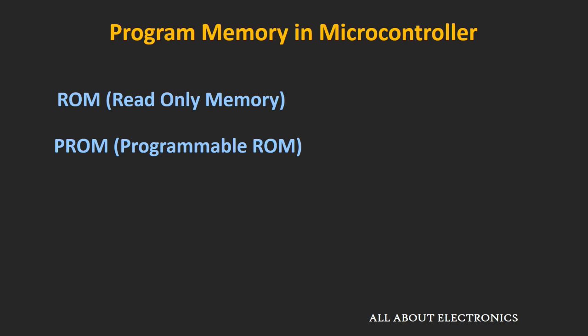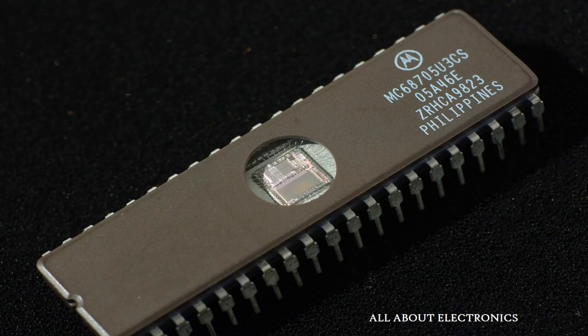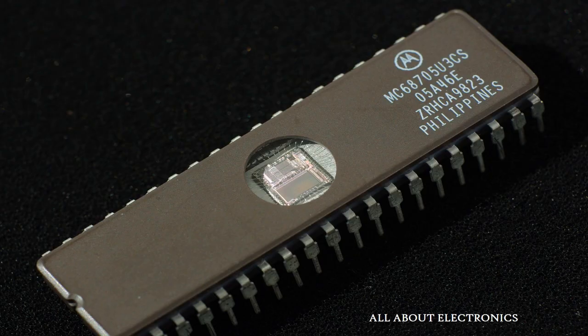As technology evolved, the third kind of memory came into the market: the EPROM, which stands for Erasable Programmable ROM. We can erase the content of this EPROM using special UV rays. A small quartz window on top of this EPROM was provided for this purpose, allowing us to erase the content and rewrite the program again inside this EPROM.